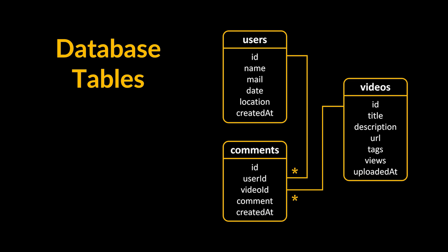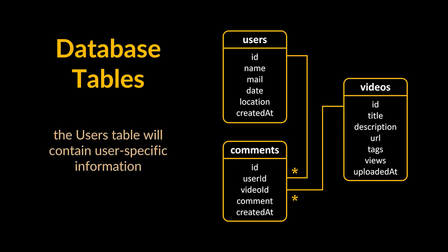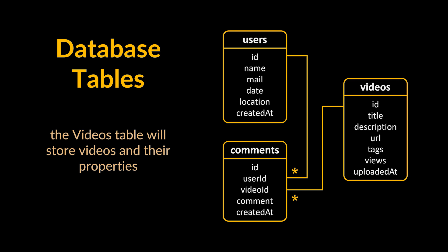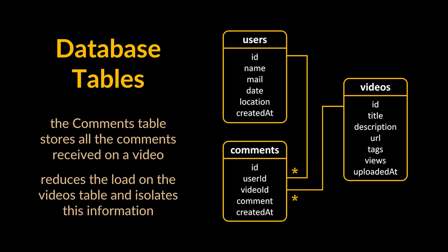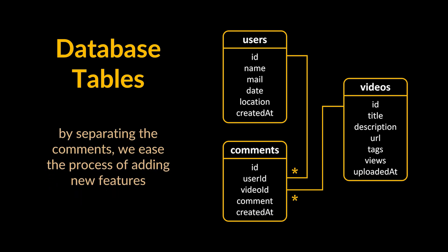Reflecting our requirements, we can have the following tables. The users table will contain user-specific information such as name, email, location, and other details. The videos table will store videos and their properties such as title, URL, tags, and views. The comments table stores all comments received on a video — separated from the videos table to reduce its load and isolate this information. By separating comments, we ease the process of adding new features such as filtering and grouping comments into categories.